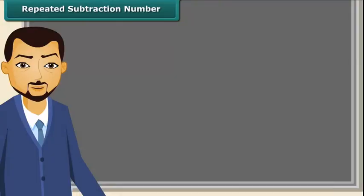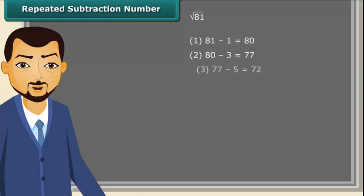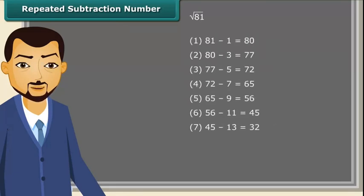We can find the square root of a given number using the repeated subtraction method. It is really easy. Consider the square root of 81 — just subtract successive odd numbers from 81, starting from 1, until the difference becomes 0. You will notice it takes 9 steps to get the difference as 0. Therefore, the square root of 81 is 9.